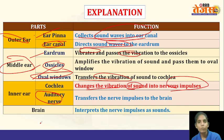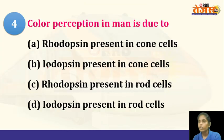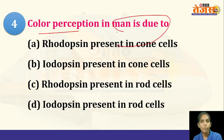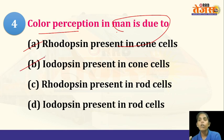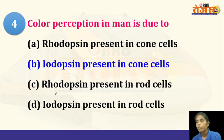Next question: color perception in humans — how do we know that a particular thing is blue, green, yellow, or violet? The options are rhodopsin present in cone cells, iodopsin present in cone cells, rhodopsin present in rod cells, or iodopsin present in rod cells. The answer is iodopsin present in the cone cells, which is responsible for the ability to perceive color.